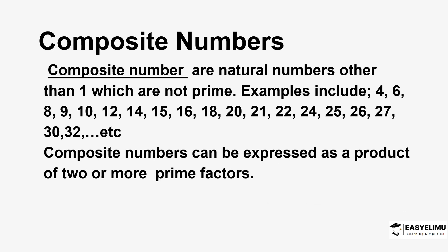So what does it mean when you talk about composite numbers? Composite numbers are natural numbers, other than 1, which are not prime. Remember, 1 is also not prime because it has just one factor. The condition for a prime number is that it must have exactly two factors: 1 and the number itself. So if you get a number that is not prime, apart from 1, that number is called a composite number.